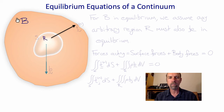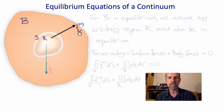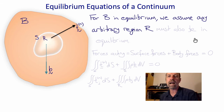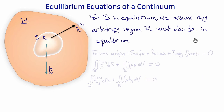Let's start by considering a body B, and in it an arbitrary region R with surface S. Acting on the surface are tractions T superscript N, and acting on the volume of the region is the body force vector B per unit mass. For B in equilibrium, we assume that any arbitrary region R of that body must also be in equilibrium, so the sum of forces — surface forces plus body forces — must equal zero.